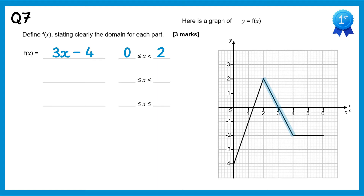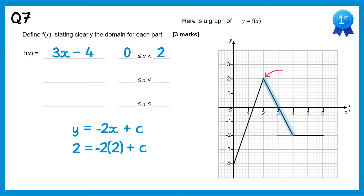The next section is also a straight line, this time with a negative gradient. Drawing a gradient triangle, the gradient is negative 2, so y equals negative 2x plus c. We can't see the intercept clearly, so we pick the point (2, 2): 2 equals negative 2 times 2 plus c, giving c equals 6. So this graph is negative 2x plus 6, for x values from 2 to 4.